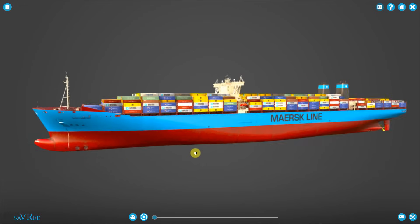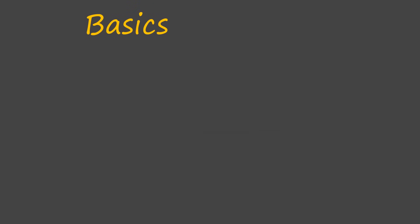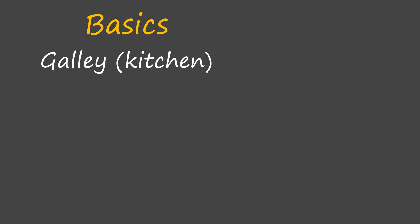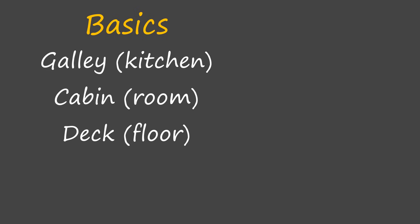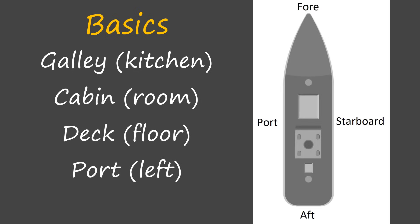So let's start with the absolute basics. The first thing you need to know about ships is that everything on a ship has a different name. You don't call a kitchen a kitchen — you actually call it a galley. The place where you live is not a room, it's a cabin. You don't have floors on a boat, you have decks. And if you're facing forward, the left side of the ship is called the port side, and the right side is called the starboard side.